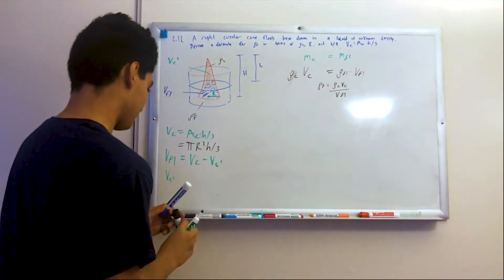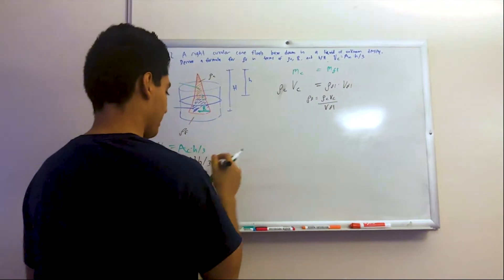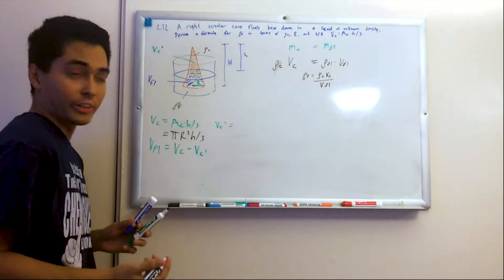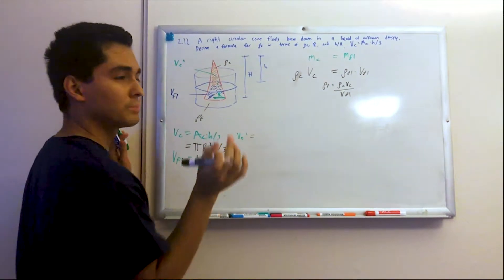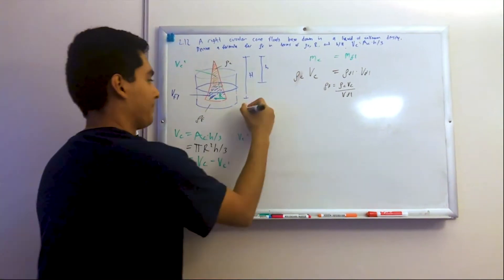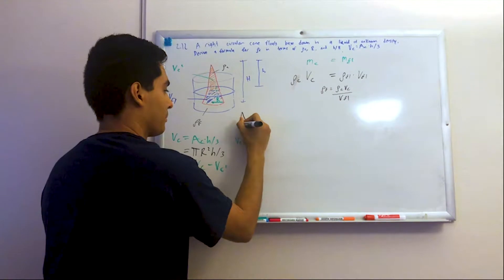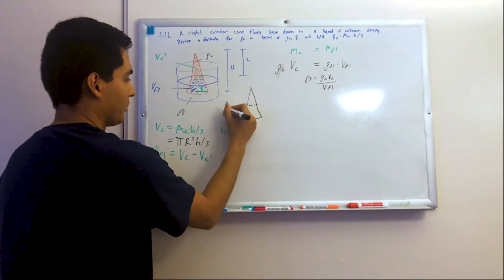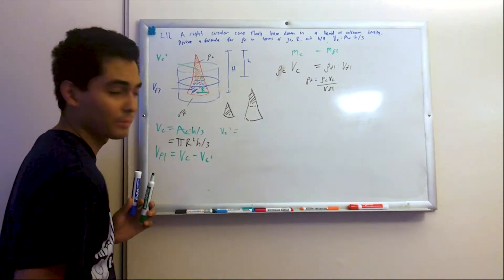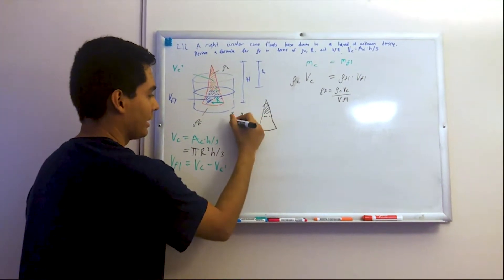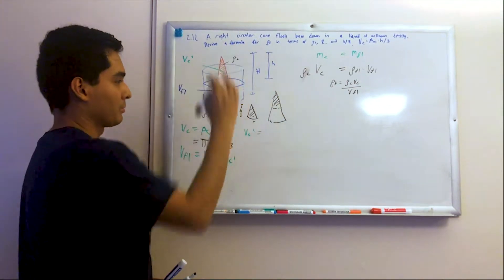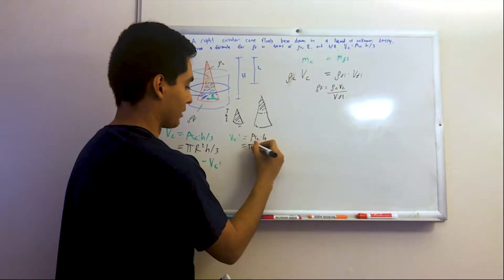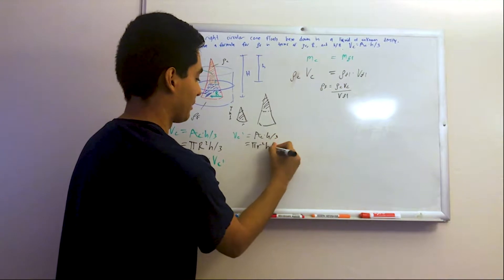The volume of the baby cone is going to be the cross-sectional area times the height. Imagine pulling out this baby cone — its radius is little r and its height is little h. So the volume of the baby cone equals pi*r²*h/3.